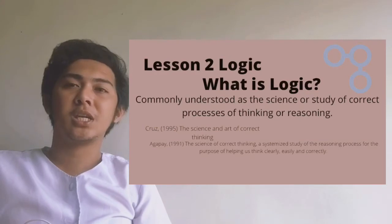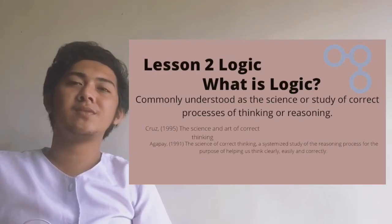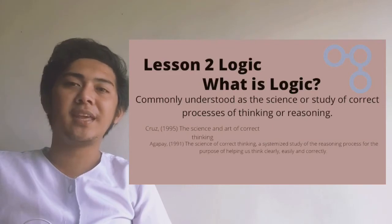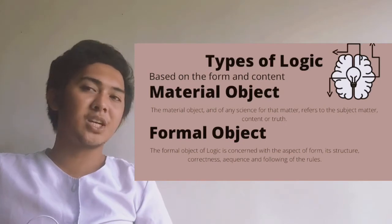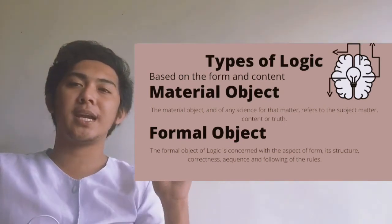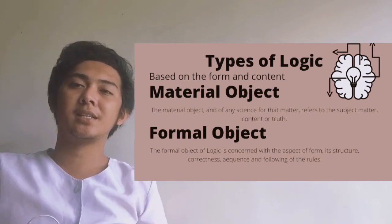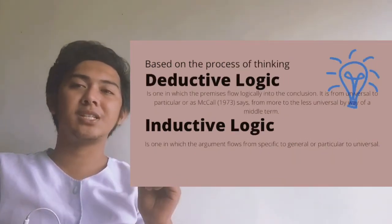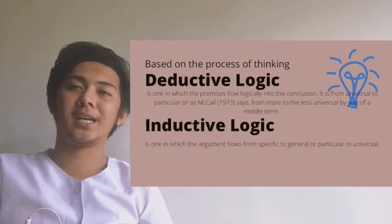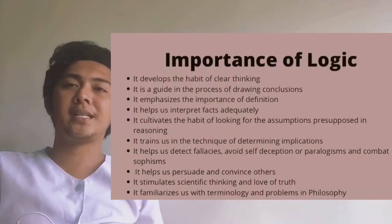Lesson 2 is about logic. What is logic? It is commonly understood as the science or study of correct processes of thinking or reasoning. We have the types of logic — based on form and content, we have the material object and the formal object. And based on the process of thinking, we have deductive logic and inductive logic. We can also see here the importance of logic.